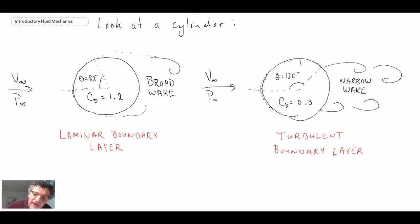It's able to make it past where it would normally separate and continue on the body, then it separates aft of the 90 degree point. That results in a narrower wake, a lower form drag. That is a characteristic of the cylinder.